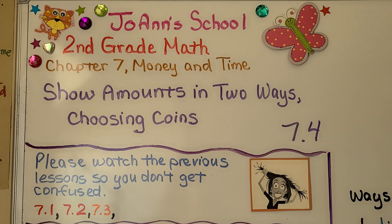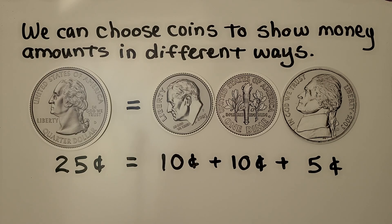Lesson 7.4: Show amounts in two ways. This is about choosing coins. We can choose coins to show money amounts in different ways.